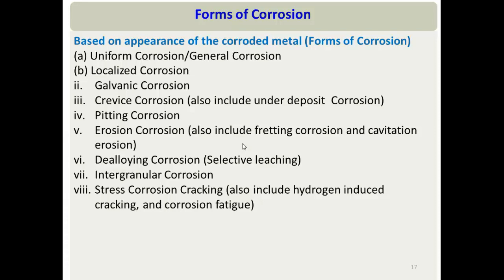Other forms include cavitation erosion (occurring in boilers and other sections), dealloying corrosion (such as in brass where copper and zinc separate, losing alloy properties), intergranular corrosion (very important in stainless steel), and stress corrosion cracking — which also includes corrosion fatigue from cyclic stress and hydrogen embrittlement or hydrogen-induced cracking. We will discuss all these forms at length in subsequent lectures.